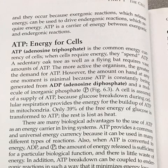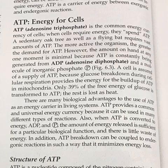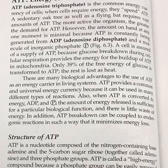ATP, or adenosine triphosphate, is the common energy currency of cells. When cells require energy, they spend ATP. A sedentary oak tree, as well as a flying bat, requires a vast amount of ATP. The more active the organism, the greater the demand for ATP. However, the amount on hand at any one moment is minimal because ATP is constantly being generated from ADP, adenosine diphosphate, and a molecule of inorganic phosphate. A cell is assured a supply of ATP because glucose breakdown during cellular respiration provides the energy for the buildup of ATP in mitochondria.